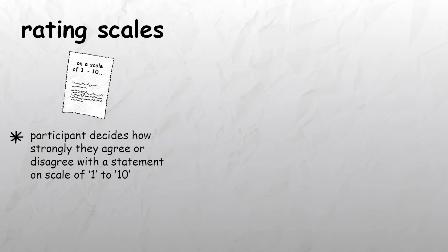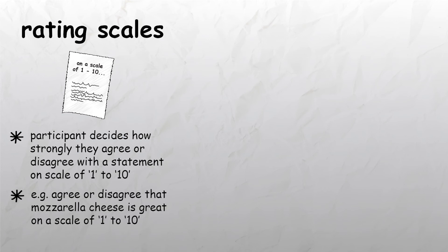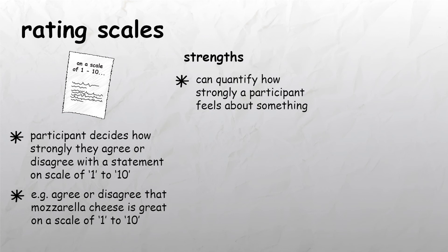Another common type of self-report is a rating scale. One of the most common types of rating scale is the Likert scale, where a statement is given by the researchers and the participants decide how strongly they agree or disagree with the statements on a scale of 1 to 10. For example, the researchers could ask the participant whether they agree or disagree that mozzarella cheese is great on a scale of 1 to 10, with 1 being strongly disagree and 10 being strongly agree. One of the main strengths of a Likert scale is that they can quantify how strongly a participant feels about something, which gives more detail than a simple yes or no answer.